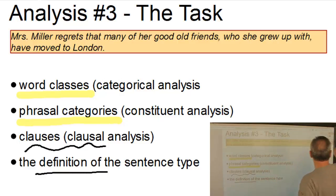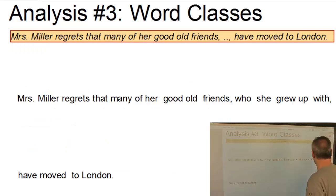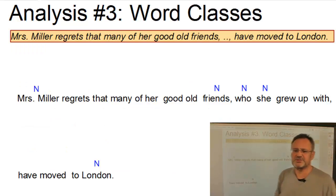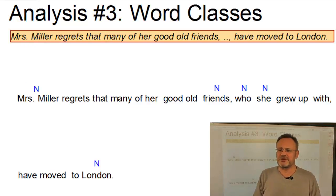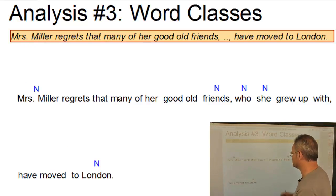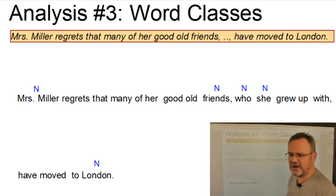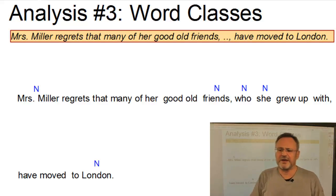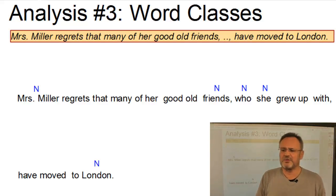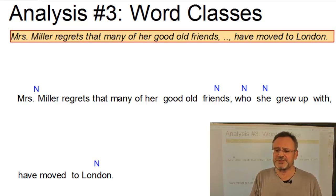So let us assign the word classes first. Our sentence contains several nouns. We have two names — Mrs Miller and London — and we have a count noun, friends, and two pronouns: she and who.